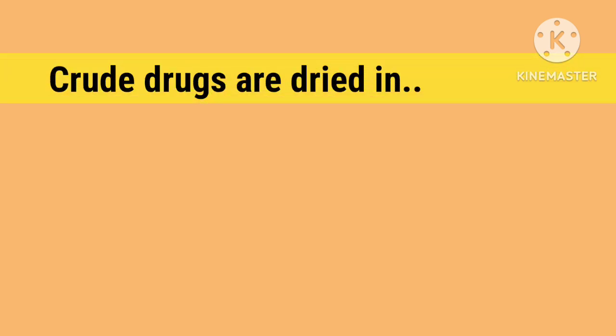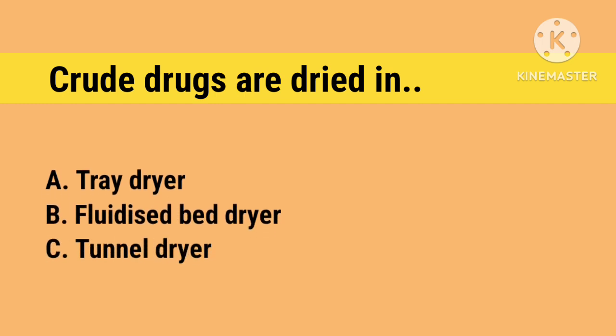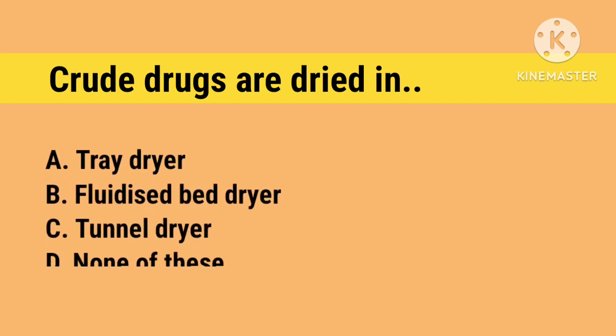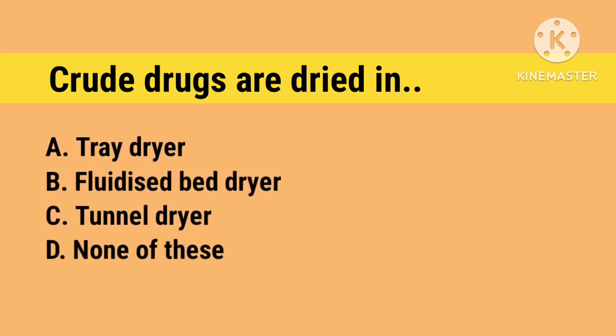Crude drugs are dried in: Option A. Tray dryer, B. Fluidized bed dryer, C. Tunnel dryer, D. None of these. Right answer is A. Tray dryer.